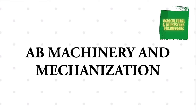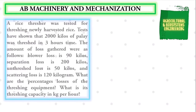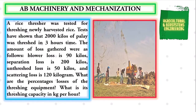Welcome to another tutorial video regarding AB Machinery and Mechanization. This time, we will be solving the problem: a rice thresher was tested for threshing newly harvested rice. Tests have shown that 2000 kilos of palay was threshed in 3 hours time.